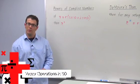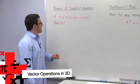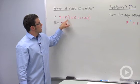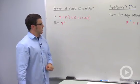I want to talk about powers of complex numbers. Let's start by calculating the square of this complex number, z equals r times cosine theta plus i sine theta.